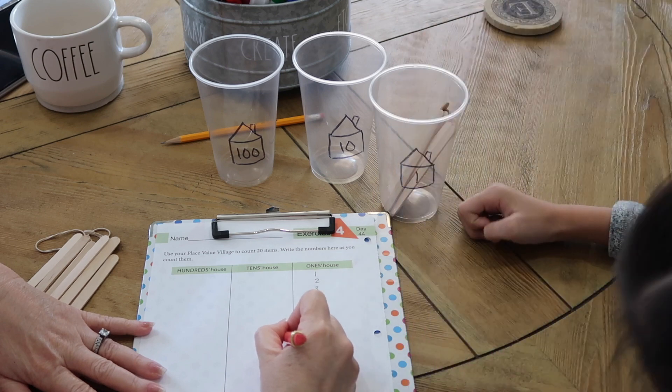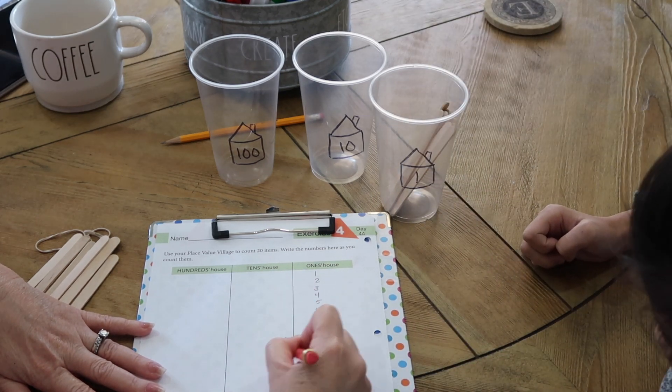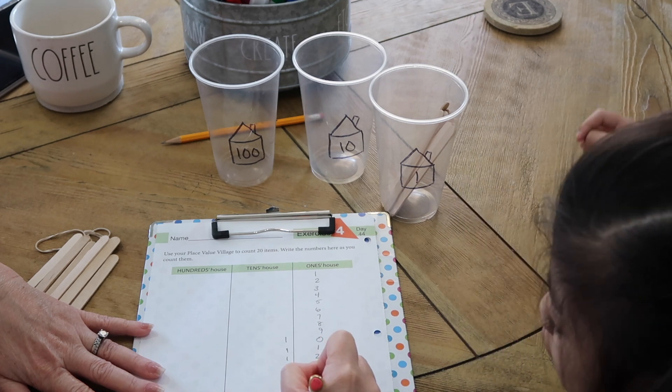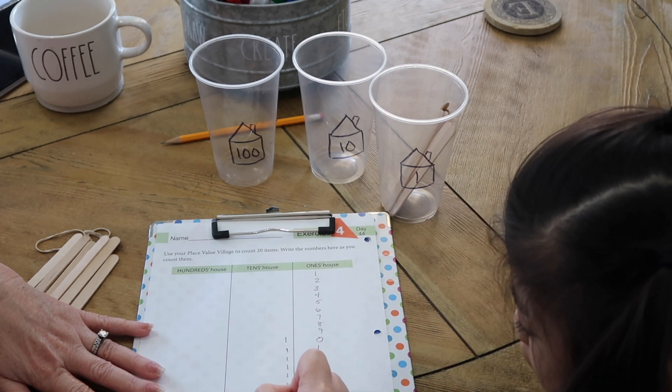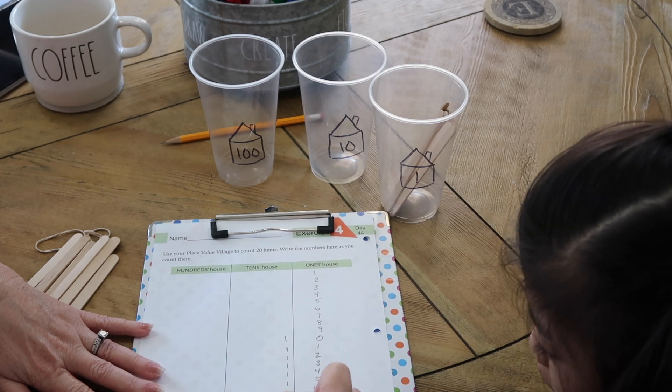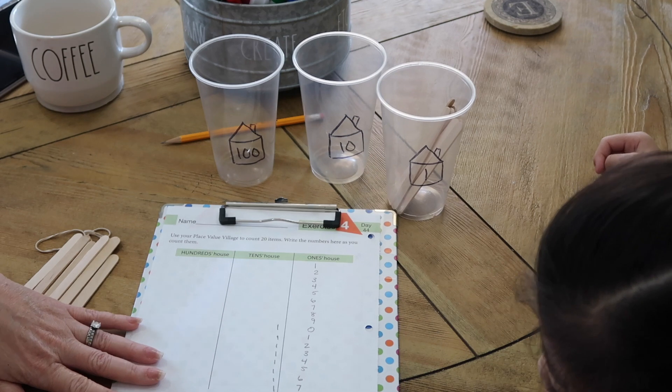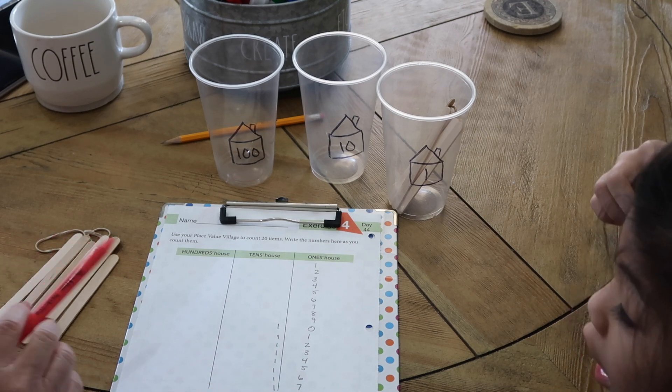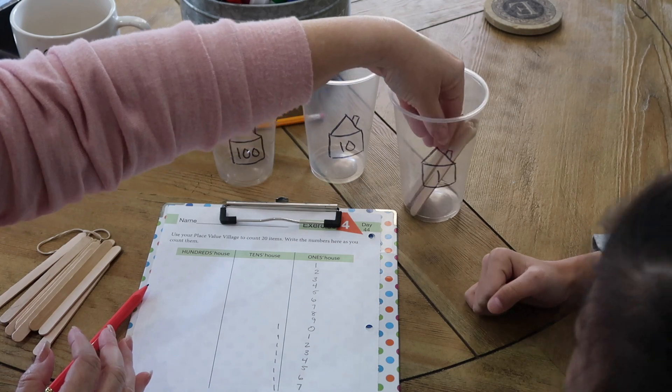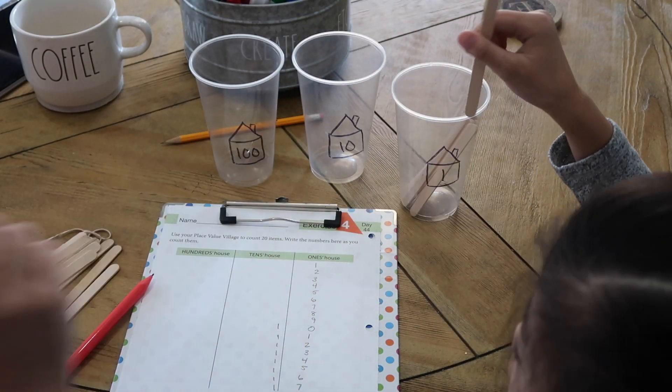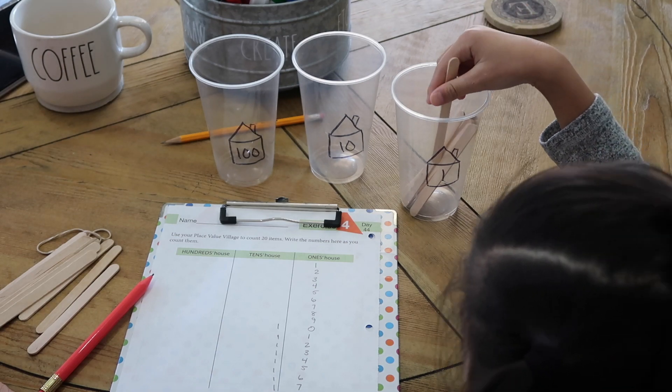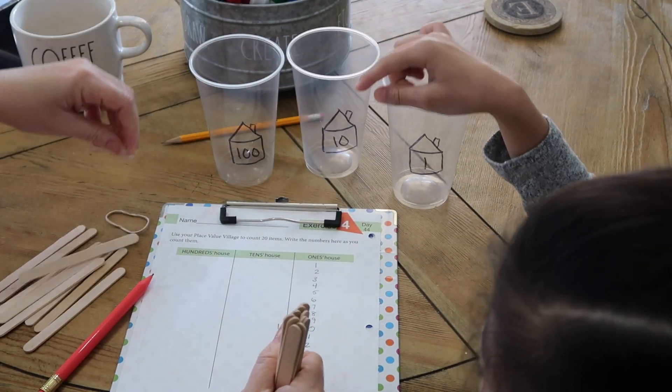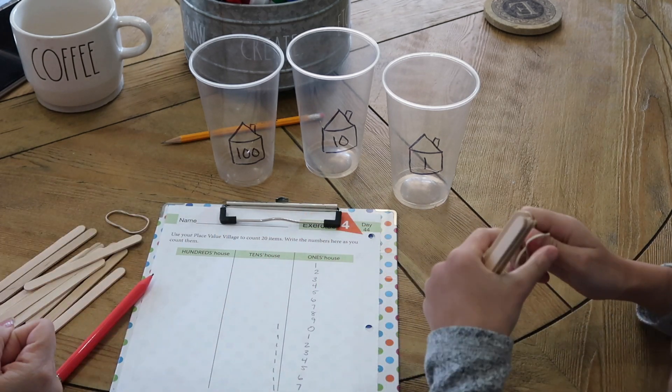So what do we do with ten? We put ten like this, right? Ten, eleven, twelve, thirteen, fourteen, fifteen, sixteen, seventeen, eighteen, nineteen, twenty. I almost ran out of room, didn't I? So this is in the tens place. The one and the two for twenty are in the tens place. So let's go ahead and count to twenty. We have nine in the ones house. What do we do now if we need one more? That nine and then that's ten.